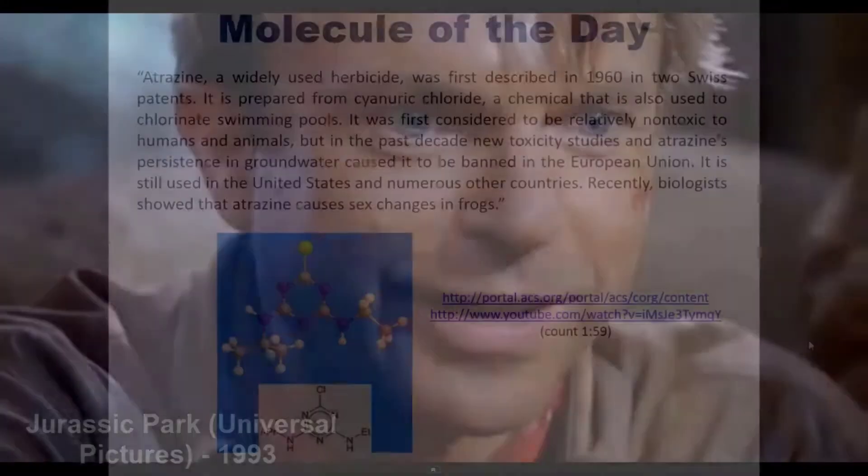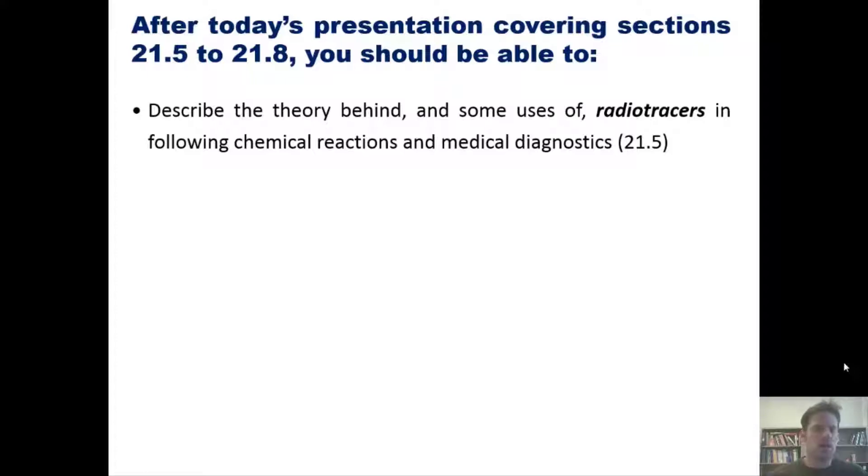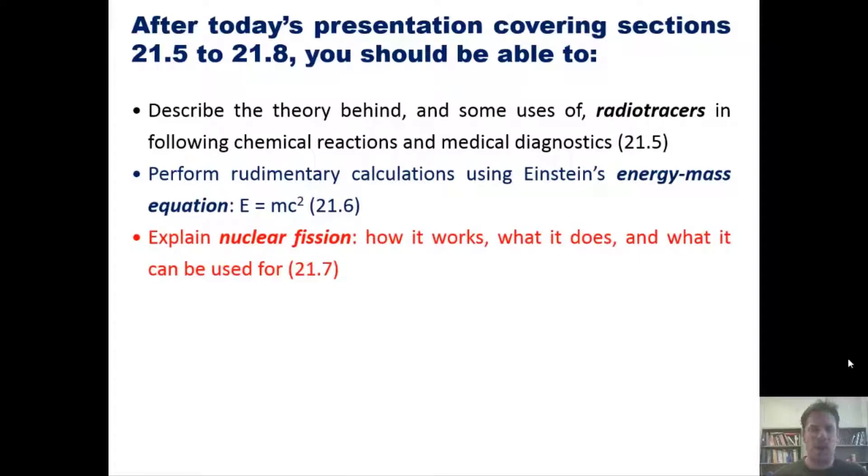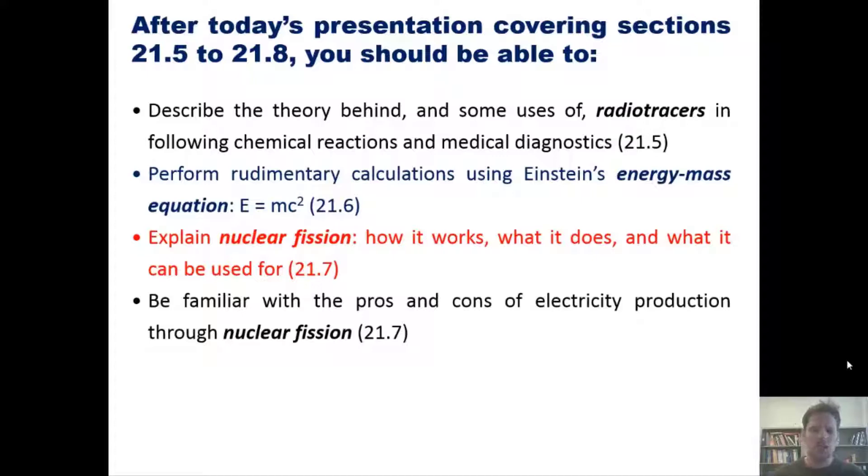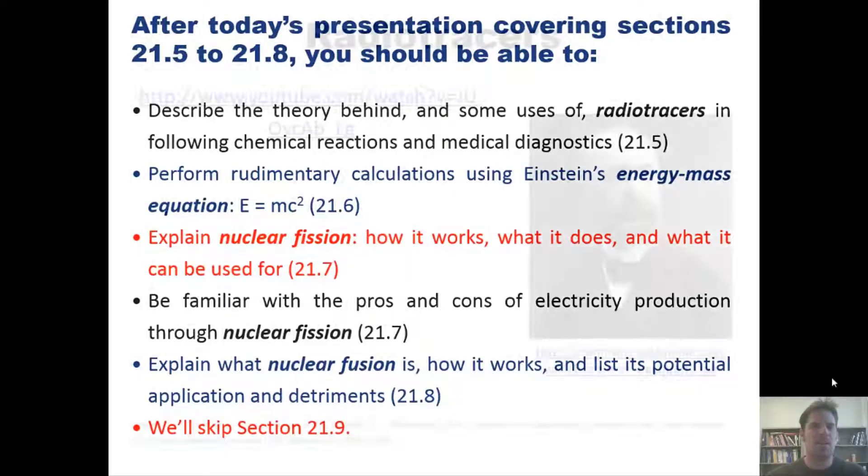After today's lecture, which will cover sections 5 through 8 from chapter 21 of our text, you guys should be able to: describe the theory behind and some uses of radiotracers in following chemical reactions and medical diagnostics; perform rudimentary calculations using Einstein's energy-mass equation, or E equals mc squared; explain nuclear fission, how it works, what it does, and what it can be used for; be familiar with the pros and cons of electricity production through nuclear fission; explain what nuclear fusion is, how it works, and list its potential applications and detriments. And note that we will skip section 9. That's the lineup. Let's get started beginning by the discussion of radiotracers.